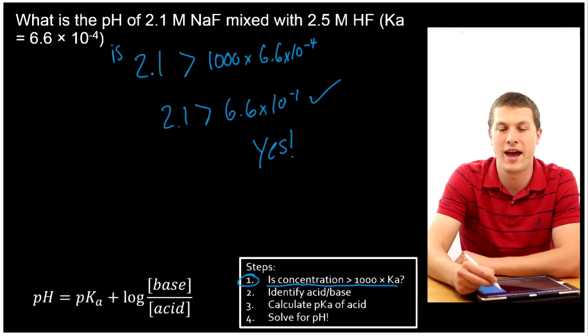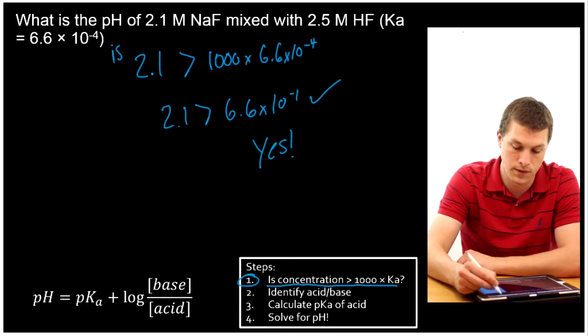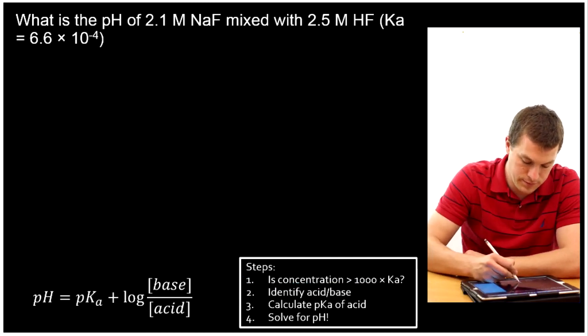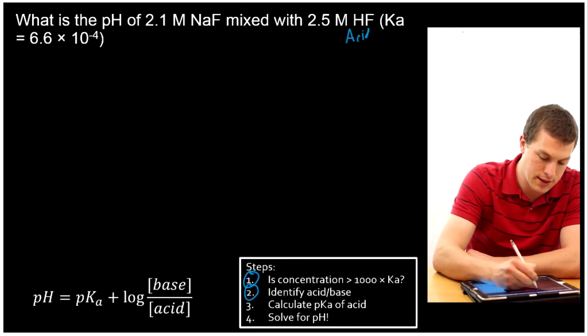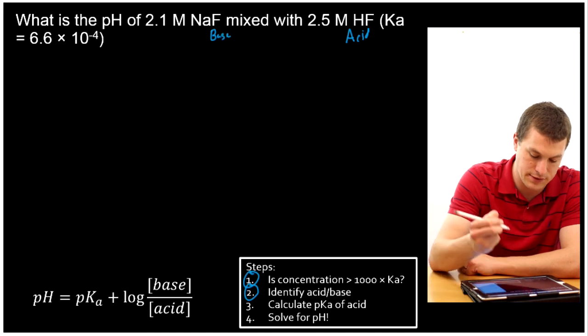Cool, so we can use it. Now, you may ask, do I really have to do that? And the answer is yes, because if you can't use the Henderson-Hasselbalch equation, you have to use an ice table instead. We've done step one. Step two is to identify the acid or base. We've already said the HF is the acid, and our F-minus is the base.